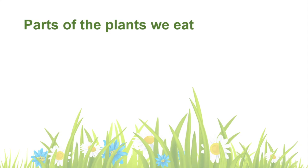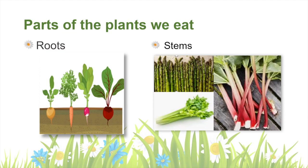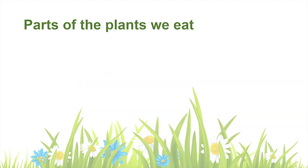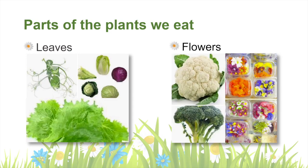We actually eat many different parts of different plants. Plants with roots we eat include onions, carrots, radishes and beetroot. Stems we eat include asparagus, celery and rhubarb. Leafy plants we enjoy include lettuce, spinach and herbs like basil. As for flowers — did you know that the part of the cauliflower and broccoli we eat is actually the flower? We also enjoy flowers such as chamomile and jasmine as tea.